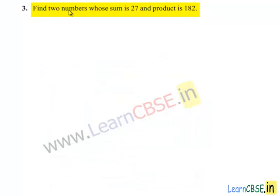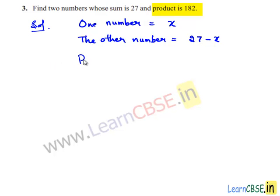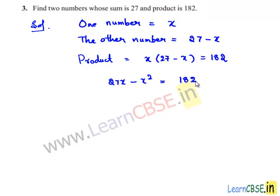Coming to the third problem: find two numbers whose sum is 27 and product is 182. Assume one number is x. Since the sum of the two numbers is 27, the other number is 27 minus x. The product of the two numbers, x times (27 minus x), is given as 182. On multiplication, 27x minus x squared equals 182.